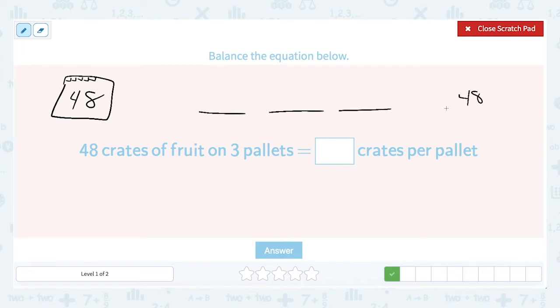So 48 divided by three, three goes into four once. And three goes into 18, six times. So this means that on each of these pallets, I'll have 16 crates here, 16 crates here, and 16 crates here.